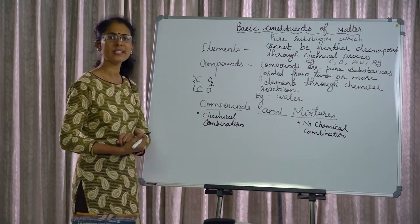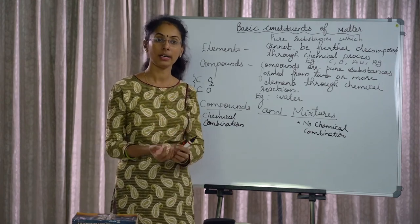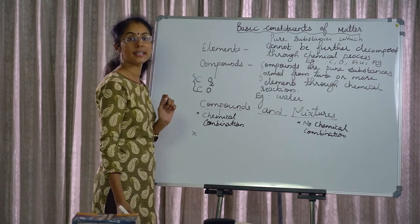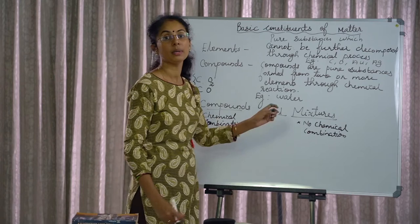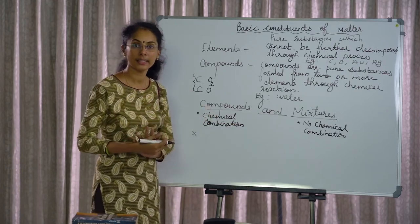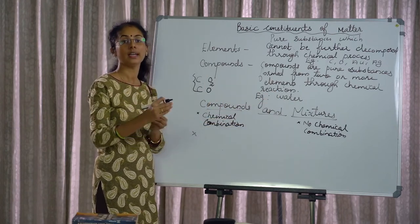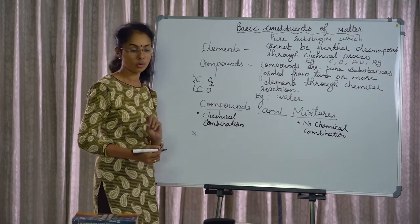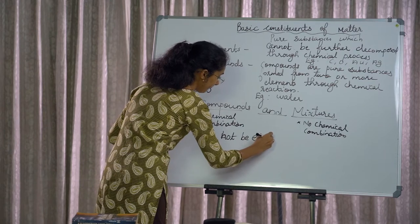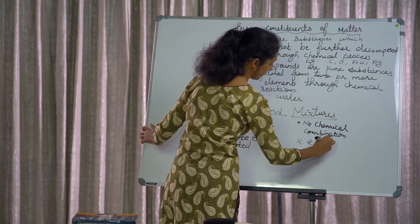The second point: compounds are difficult to separate. For example, water must be separated through a chemical process — it is not easy. In contrast, mixtures like chips and nuts can be easily separated. That is the difference: mixtures can be easily separated, but compounds cannot.